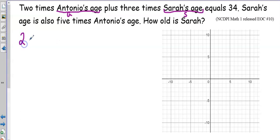So two times Antonio's age plus three times Sarah's age equals 34, and then Sarah's age is five times Antonio's age. If we were to solve graphically, I have my graph right here. I just need to graph my two equations. I'll make the x-axis represent Antonio's age and the y-axis represent Sarah's age.